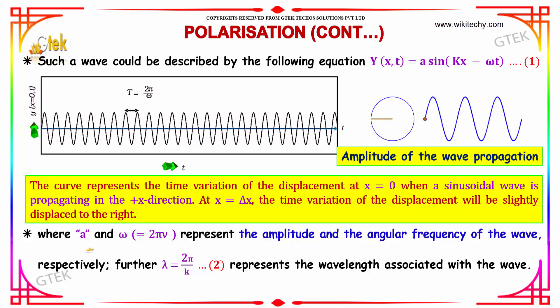Where a and ω (which is 2πν) represent the amplitude and the angular frequency of the wave respectively. Further, the wavelength λ = 2π/k.